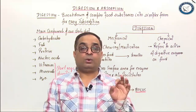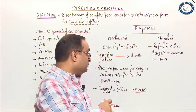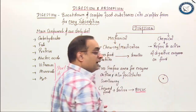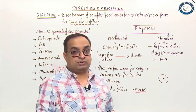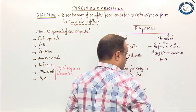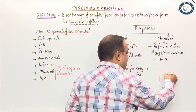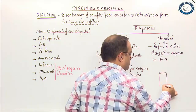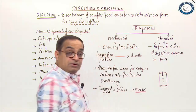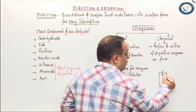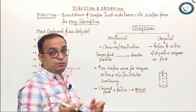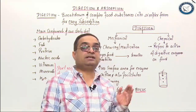Intracellular digestion means food is digested inside the cell by enzymes, as in the case of protozoans and sponges. Extracellular digestion means there is a definite cavity — the alimentary canal — designed for digestion. The animal consumes food, it goes into the alimentary canal, and the lining of the alimentary canal or associated glands secrete digestive enzymes so the food gets digested. That is extracellular digestion.